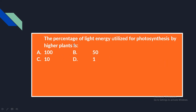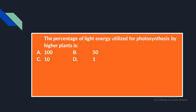The first question: the percentage of light energy utilized for photosynthesis by higher plants is — option A: 100, option B: 50, option C: 10, option D: 1. This is a very common question and has been asked several times before. The answer is one — the percentage of light energy utilized for photosynthesis by higher plants is 1%.